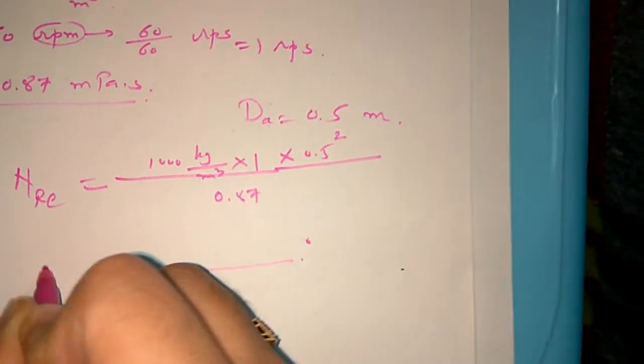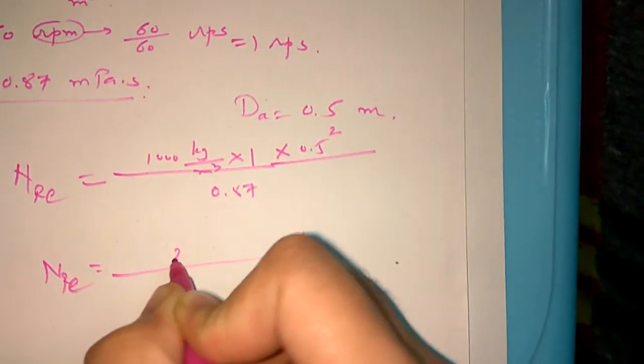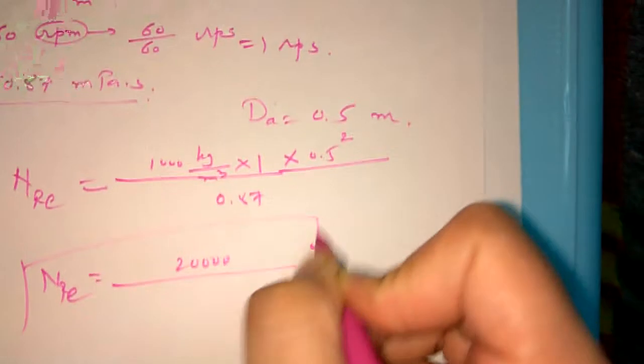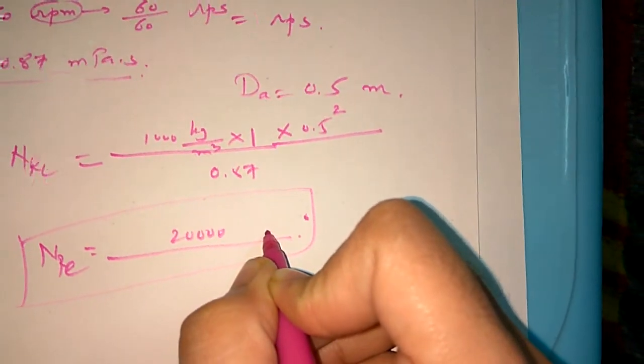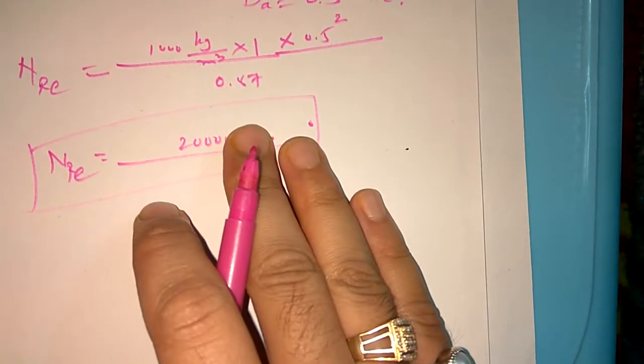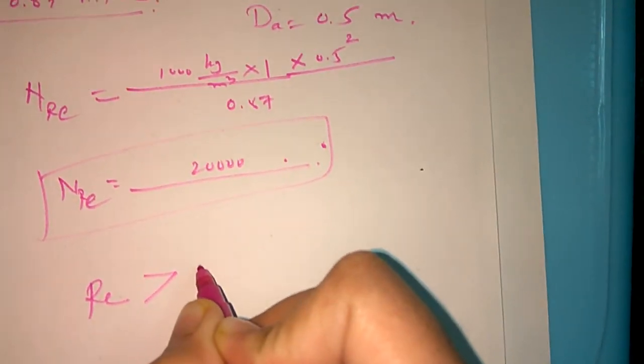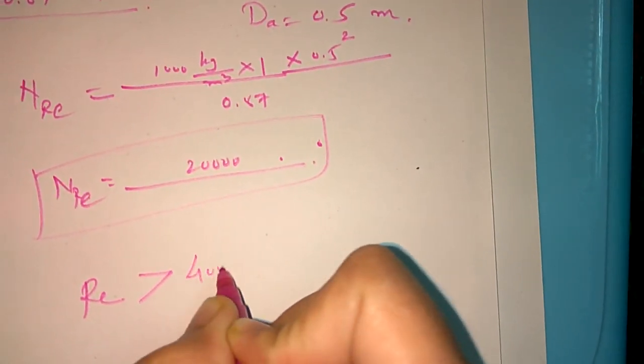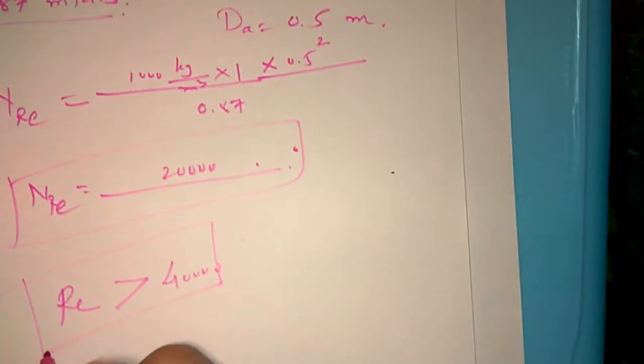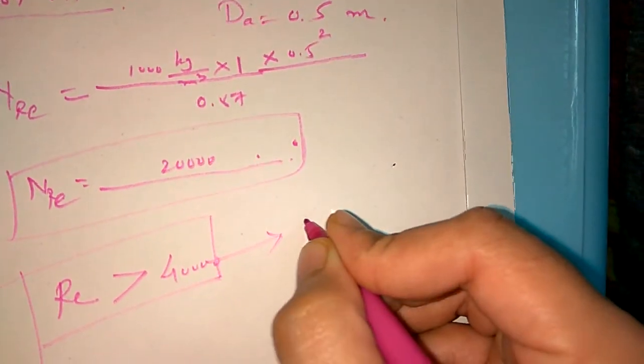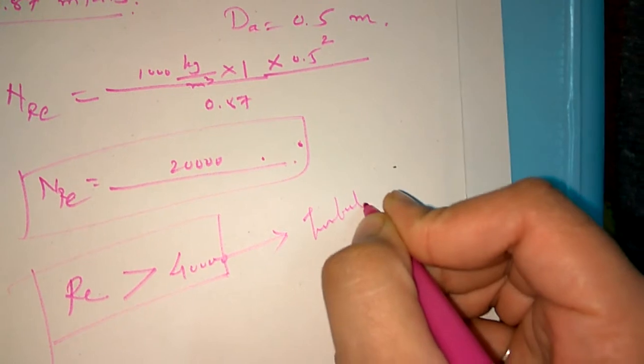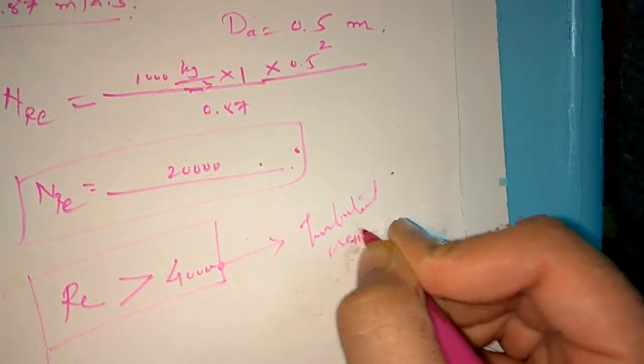Now the viscosity 0.87. We have to calculate this and whatever we have calculated, this is dimensionless. So if we suppose we get here 20,000, so there is no unit for this Reynolds number.